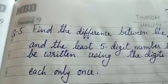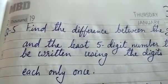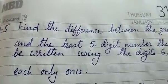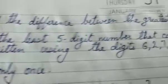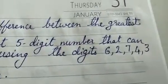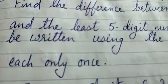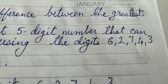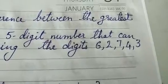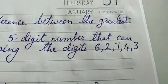Question 4 is in homework. Now we see question number 5. Find the difference between the greatest and the least five-digit number that can be written using the digits 6, 2, 7, 4, 3.